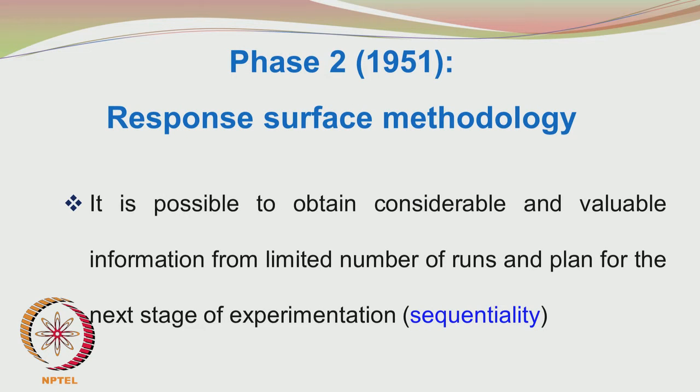Just imagine you are lost in the forest and do not know which direction to go. Similarly, the experimenter faces this situation — comfortable with R&D results but unsure where to move next, especially when there are a large number of variables influencing the process. Response surface methodology is a very effective tool here. Unlike agriculture, industrial results are available quite soon, bringing in the concept of immediacy, and you also have to plan for the next stage of experimentation, which brings in the concept of sequentiality.